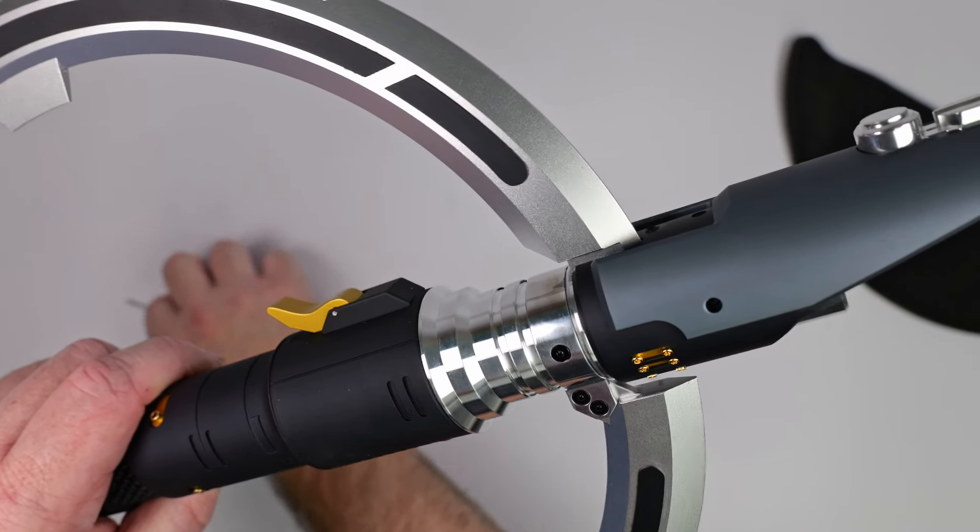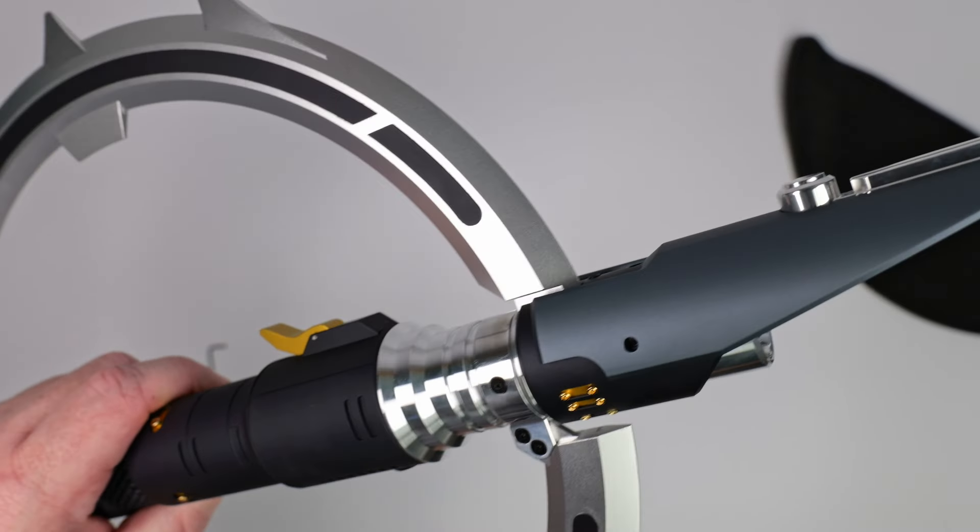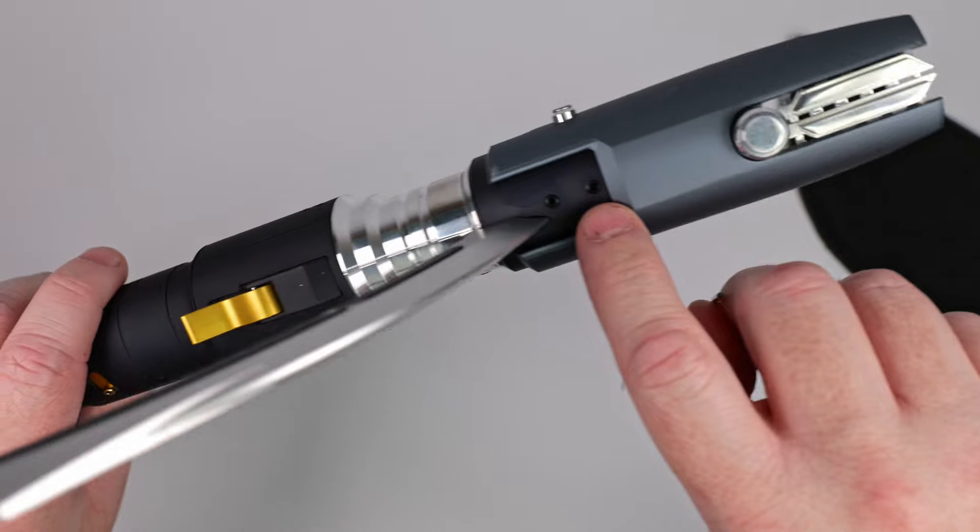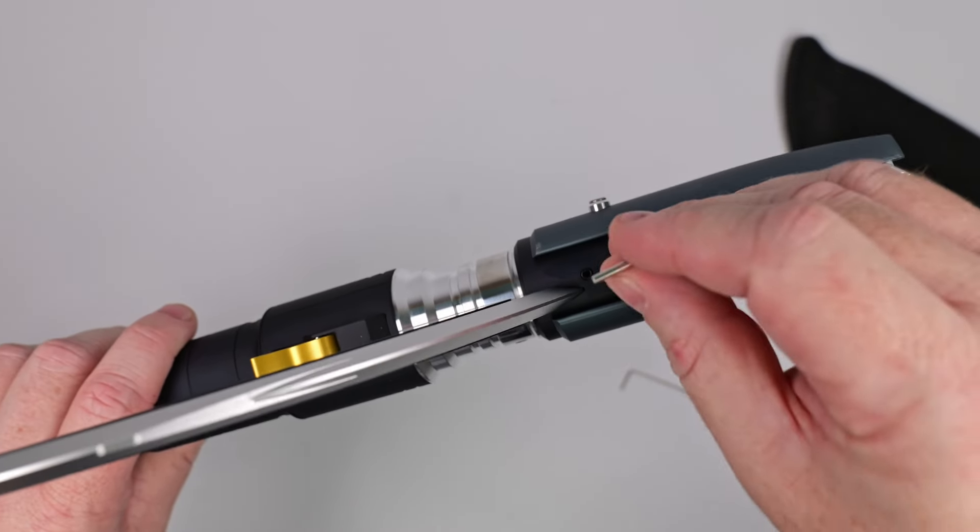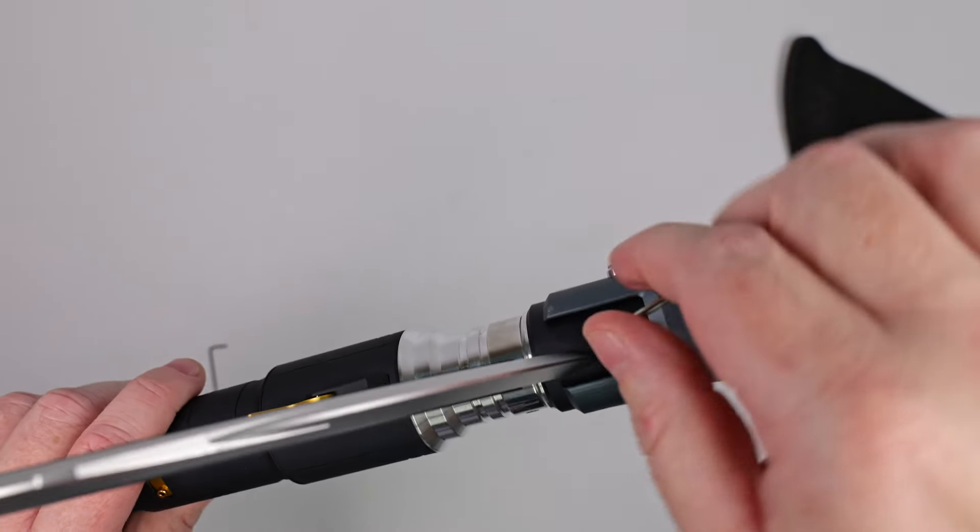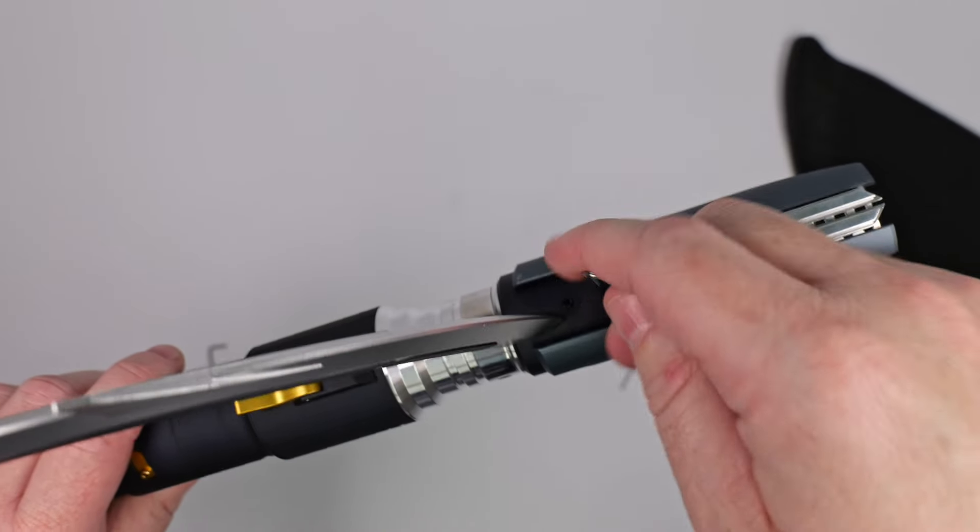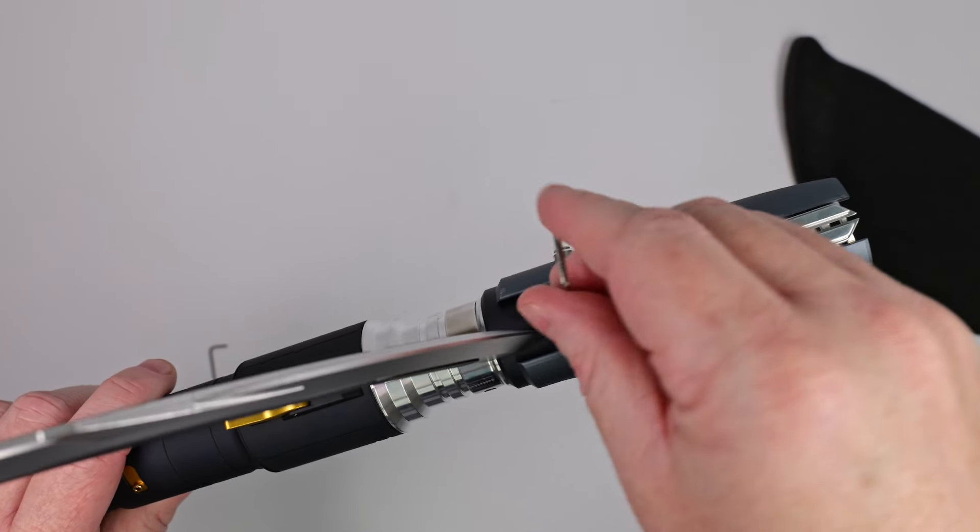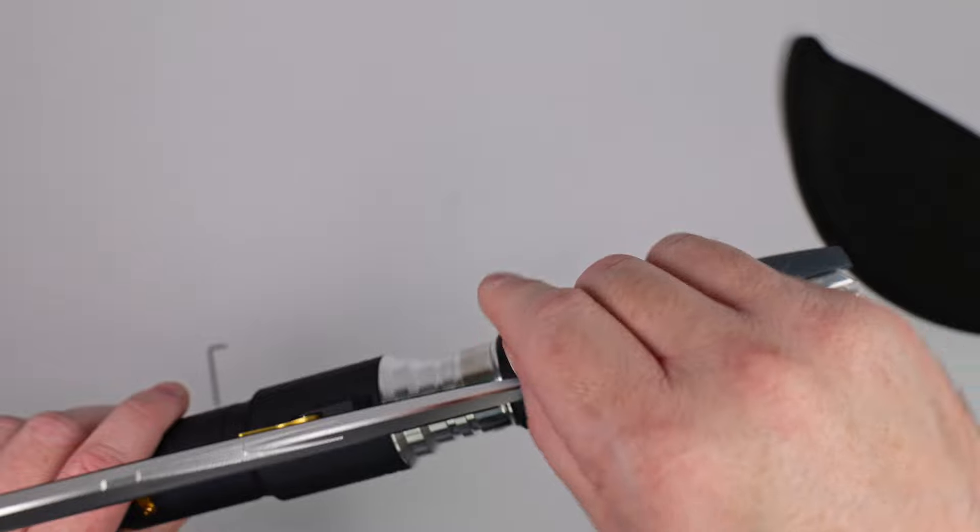To get access to the blade and the sleeve, there's two holes, two set screws here. The first one is what pins the blade, or in this case, the blade plug. So you want to undo that. And then the second one pins the sleeve.